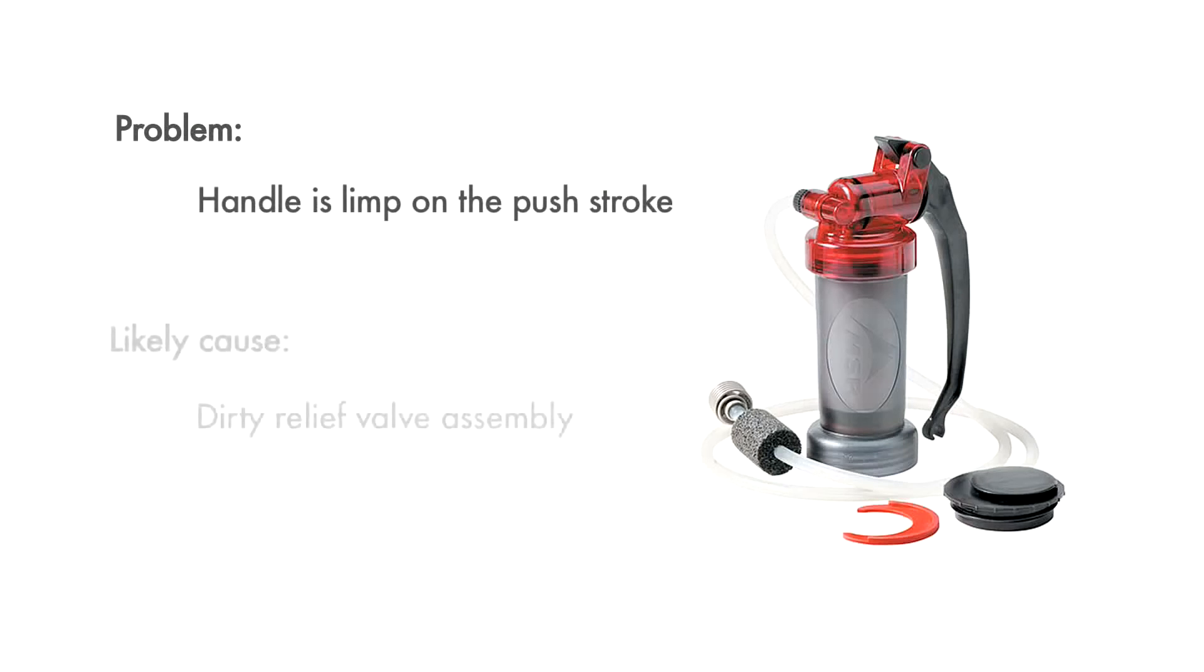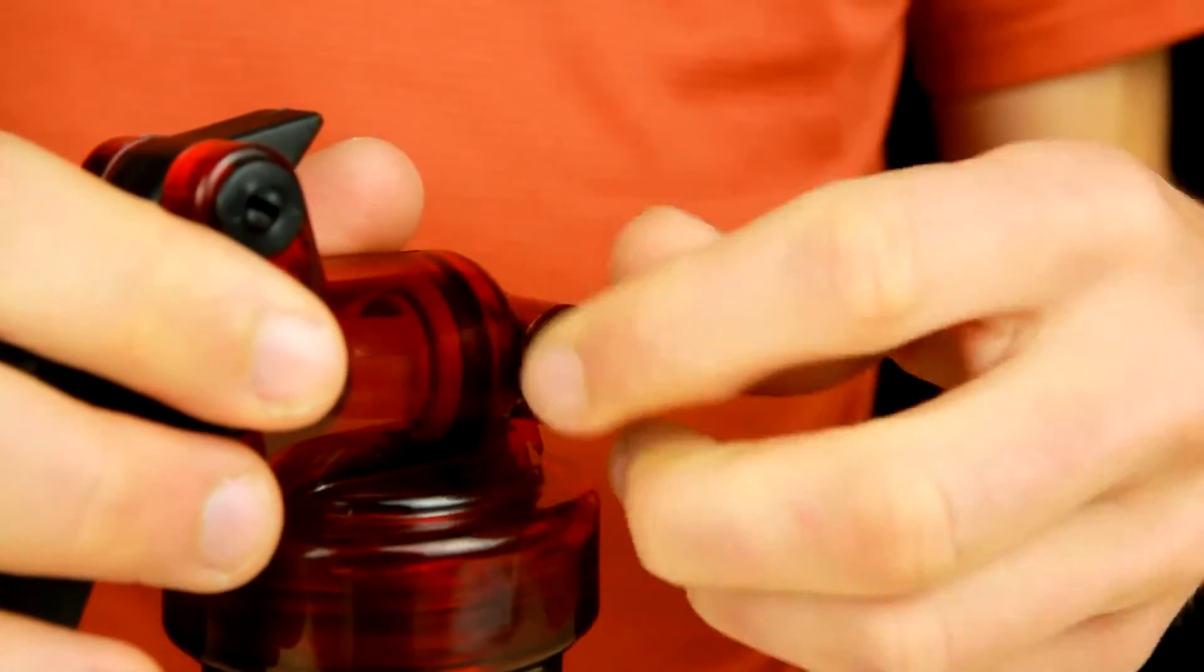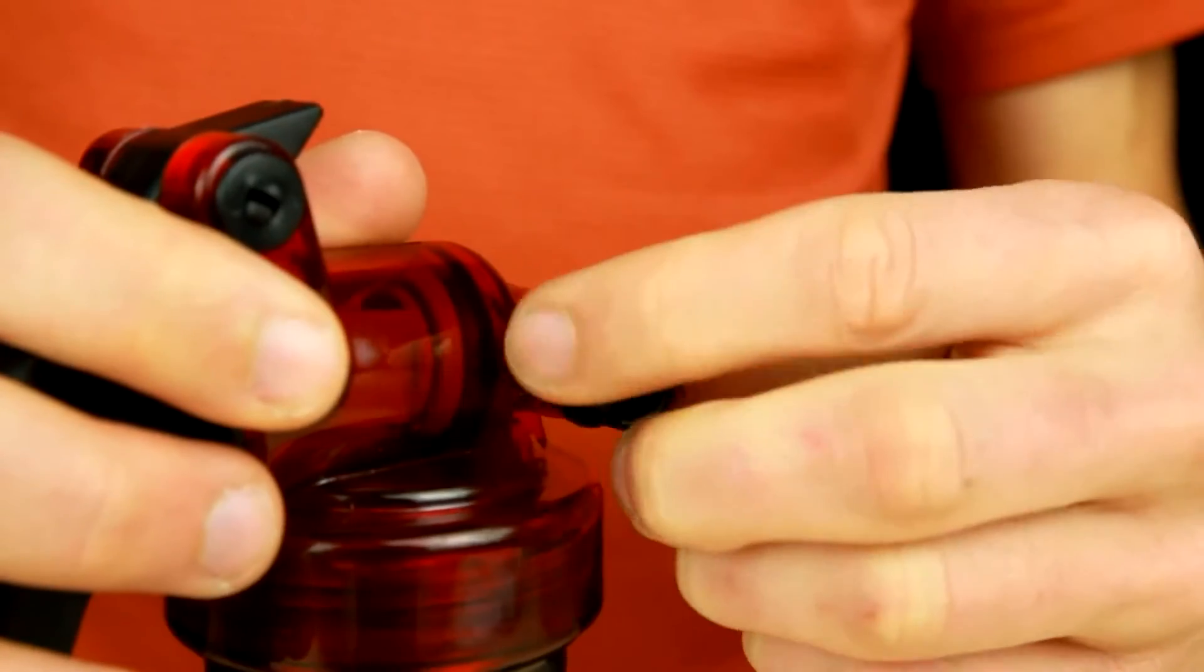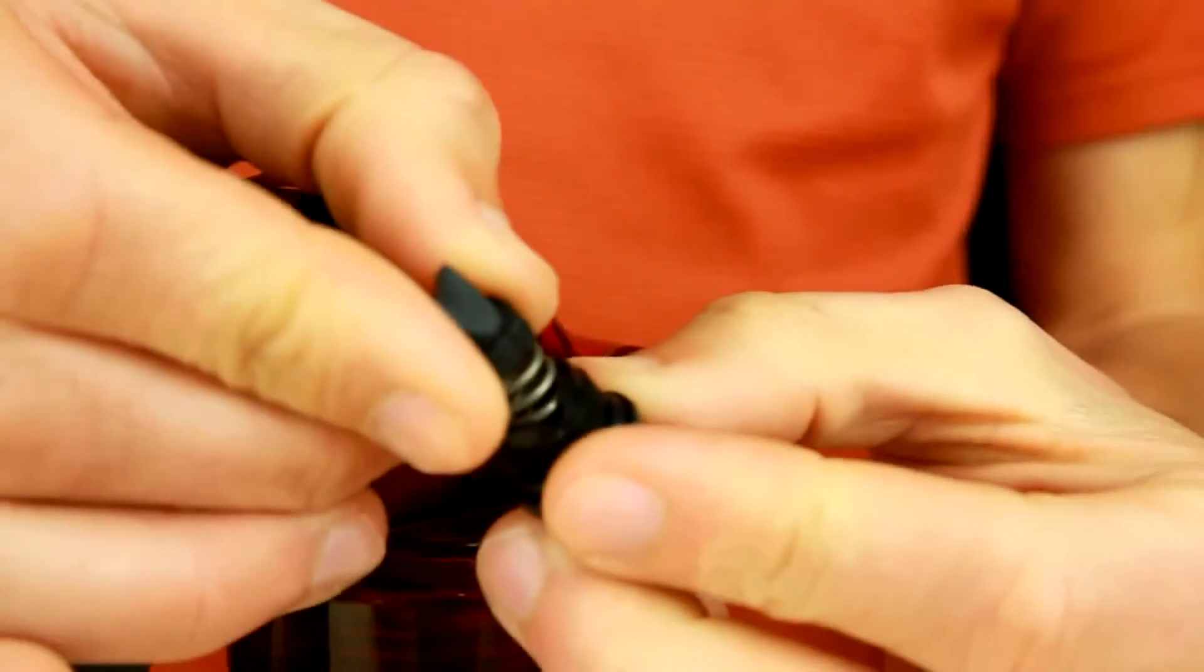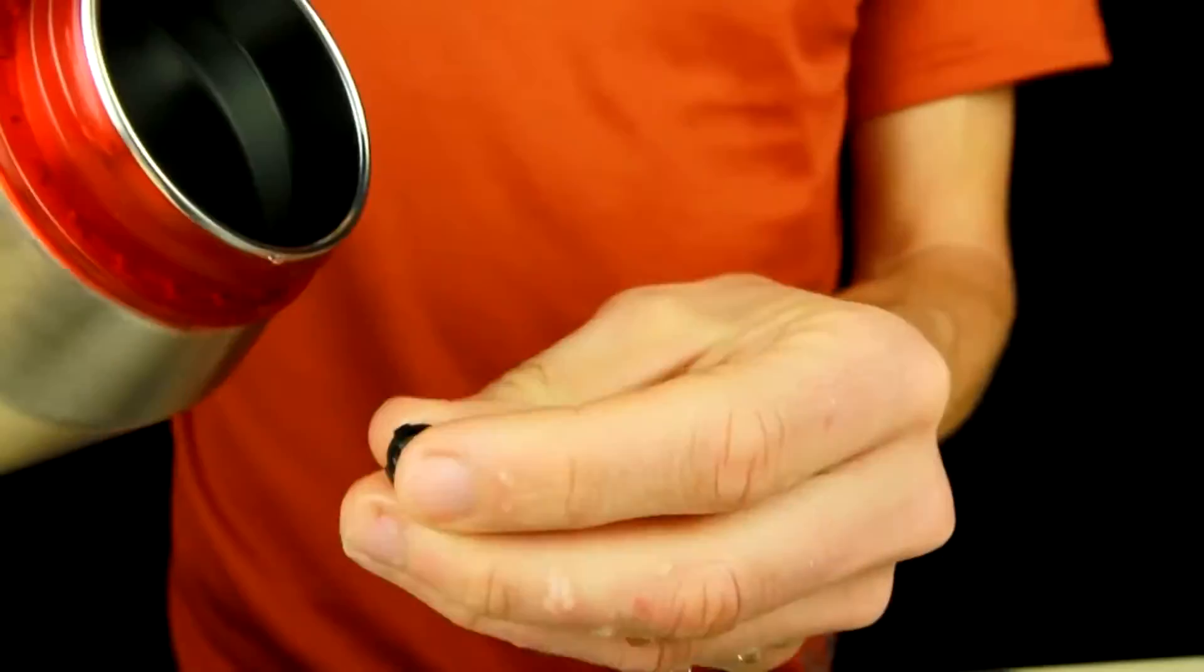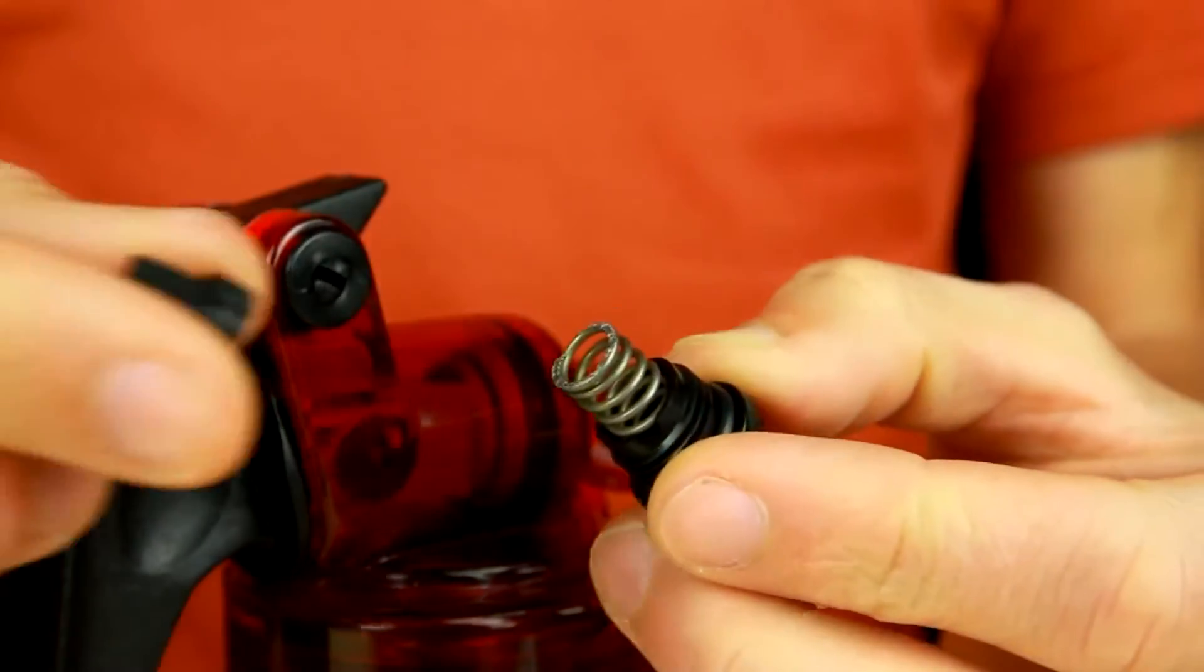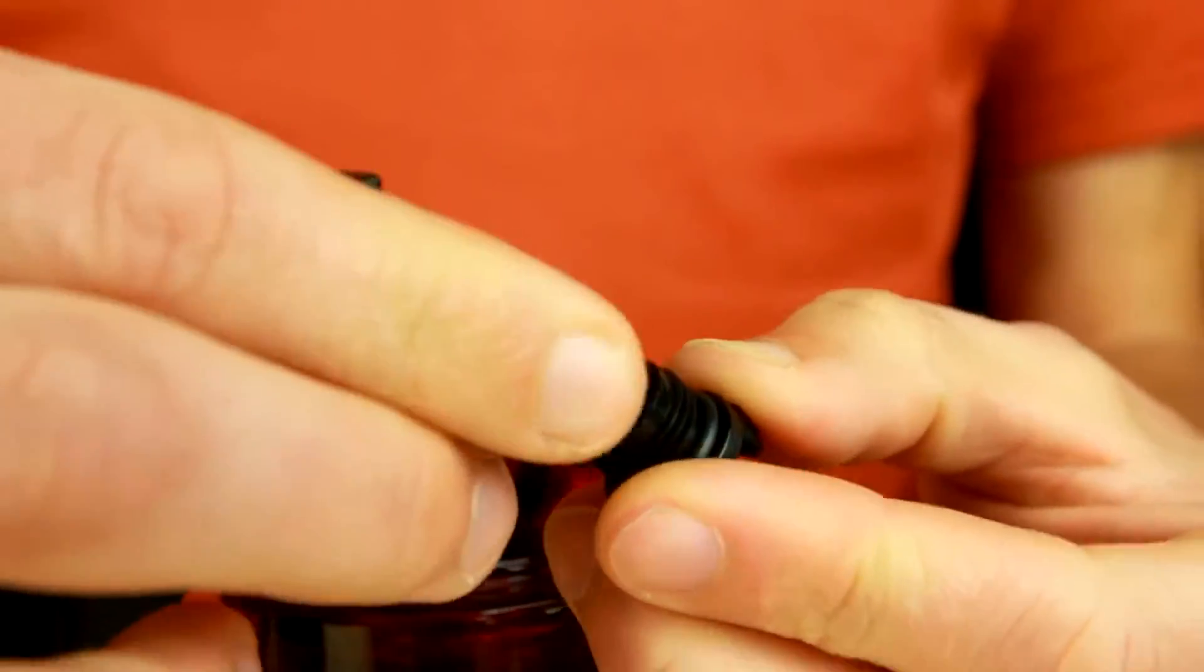Another cause for a limp push stroke is a dirty relief valve assembly. To clean the relief valve, unscrew the inlet hose barb from the pump head. Take out the parts and rinse the duck bill with clean water. Be sure to reassemble the parts in their correct order.